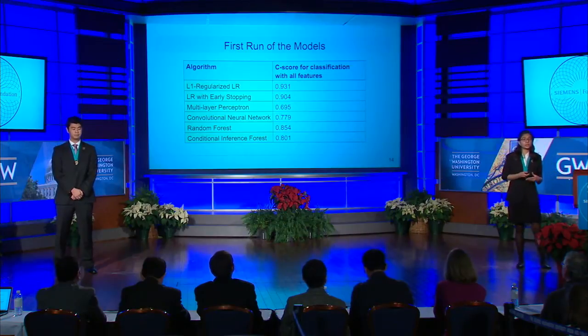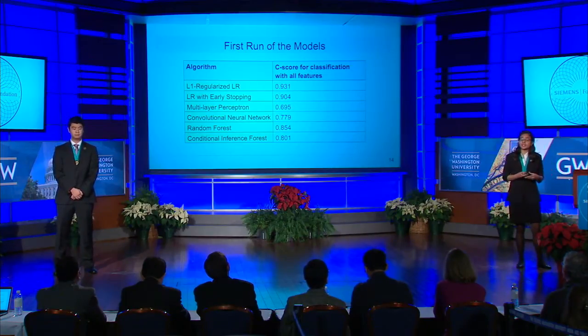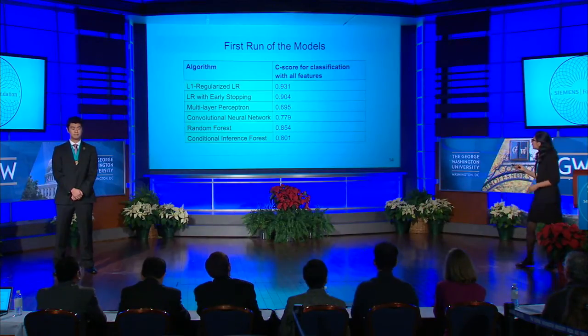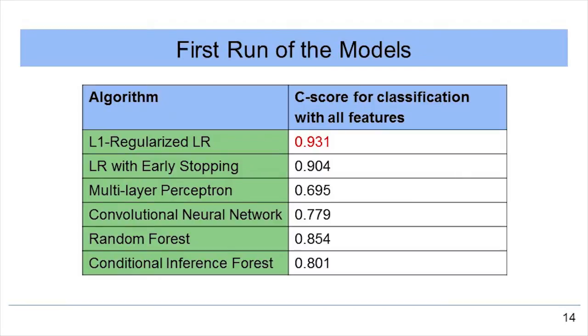Having selected our scoring method, we first obtained the C-score for classification with all features. The L1 regularized logistic regression model achieved a C-score of 0.931, higher than the other widely known models. We then tried various optimization techniques to improve the tumor diagnosis accuracy.